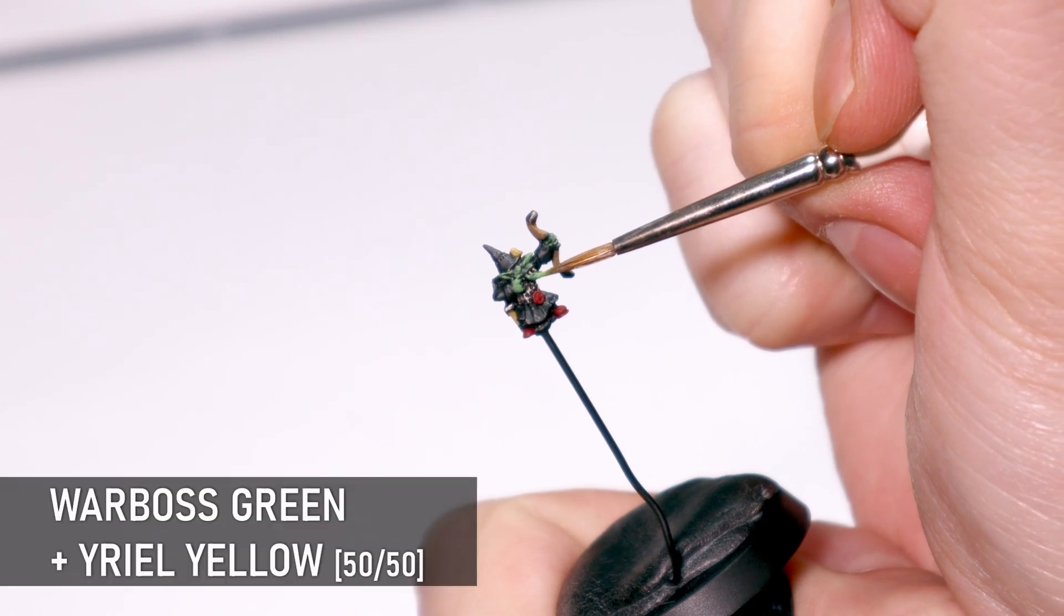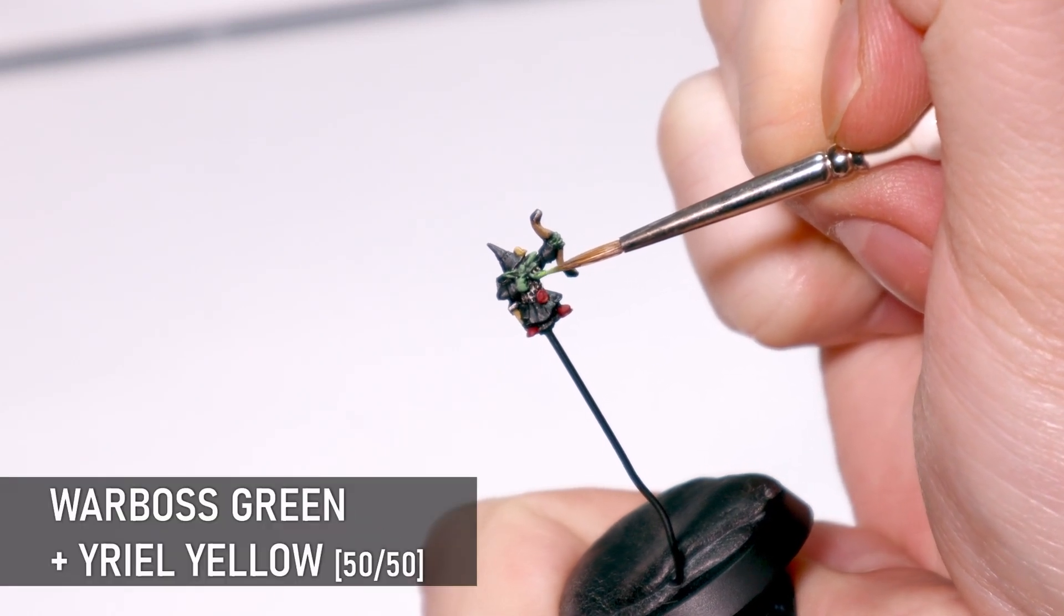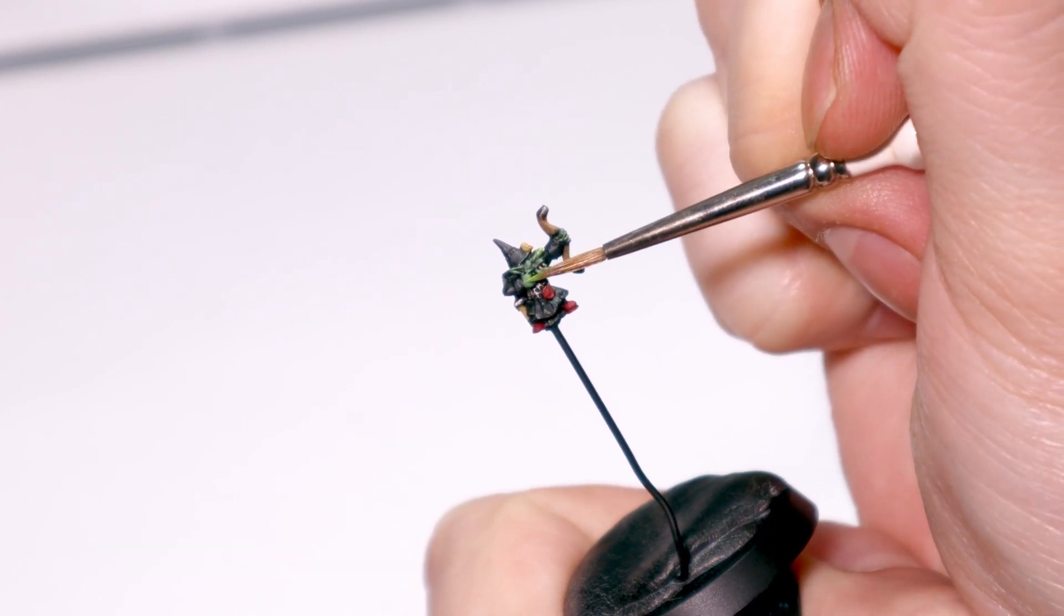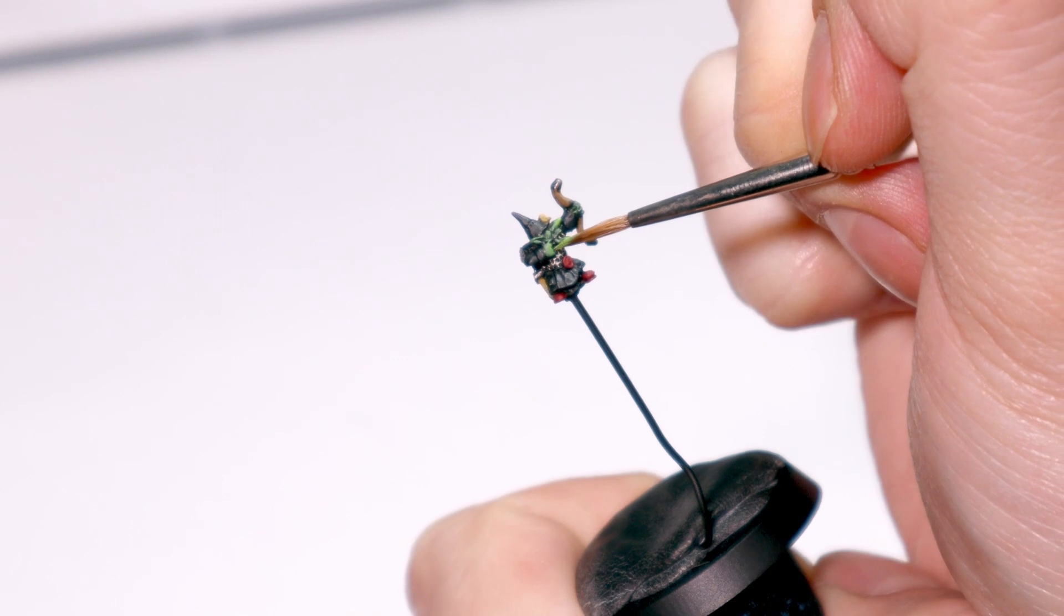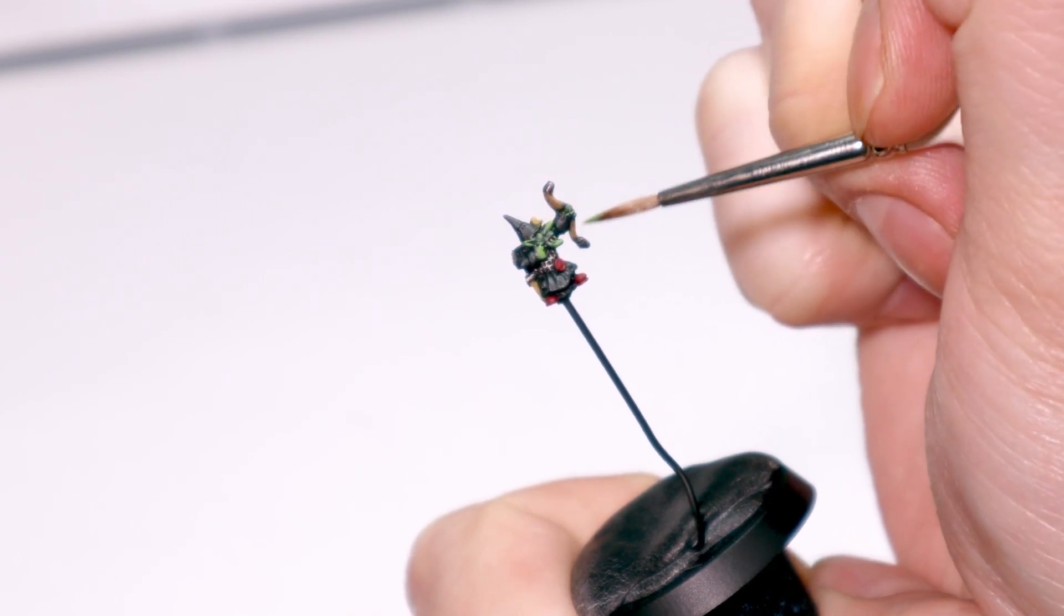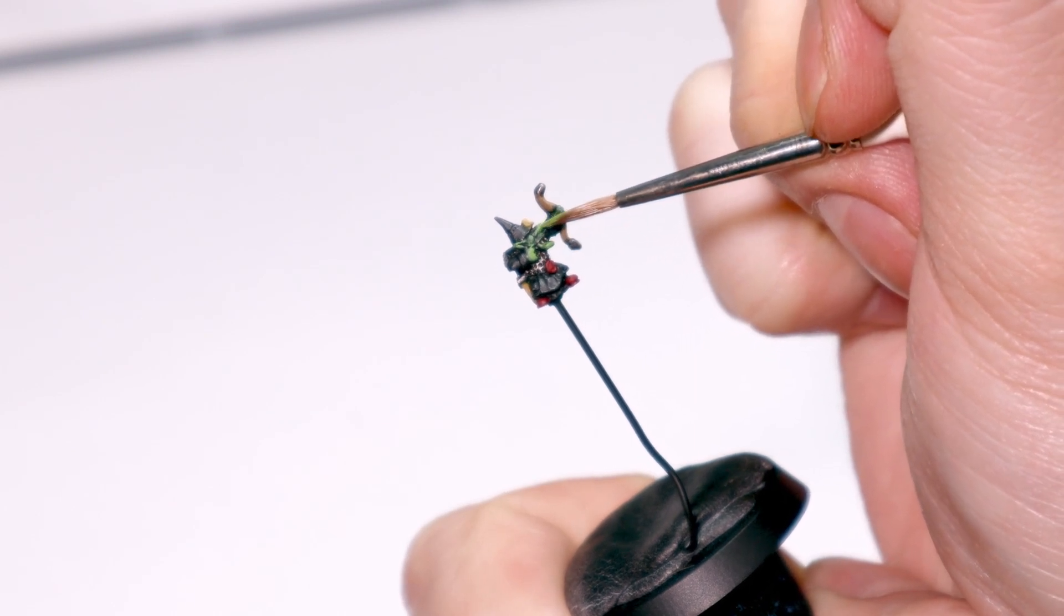Next up some highlighting. This is a bit of yellow mixed with Warboss Green to lighten the color but also to make sure it doesn't get a washed out look. I want to keep that green vibrancy here to match that classic goblin look. These kinds of miniatures don't need much in the way of highlighting, but the skin is a focal point so I'm going to do a couple of layers here.